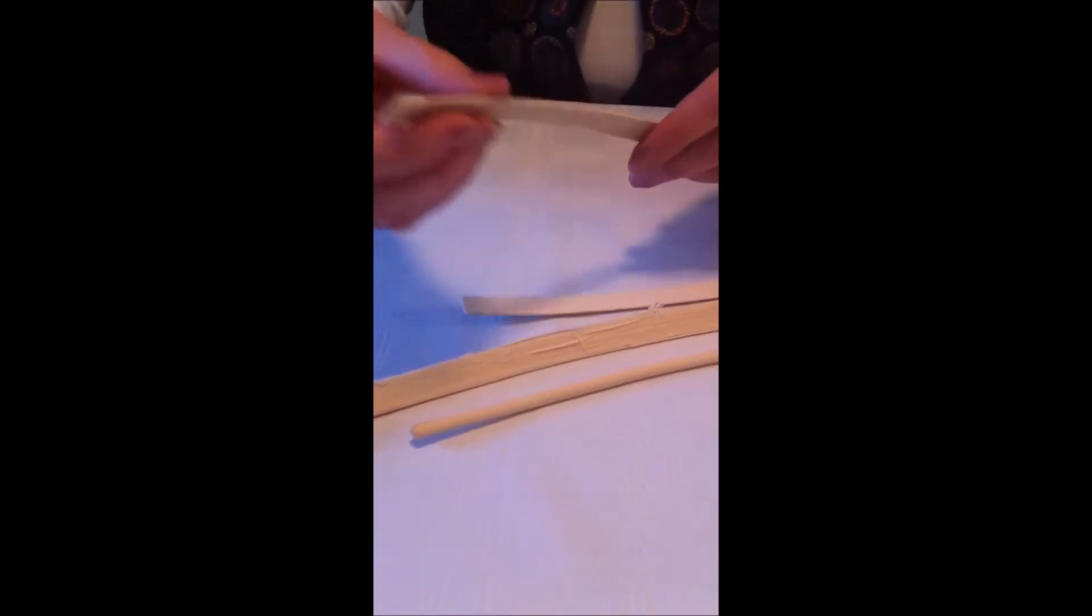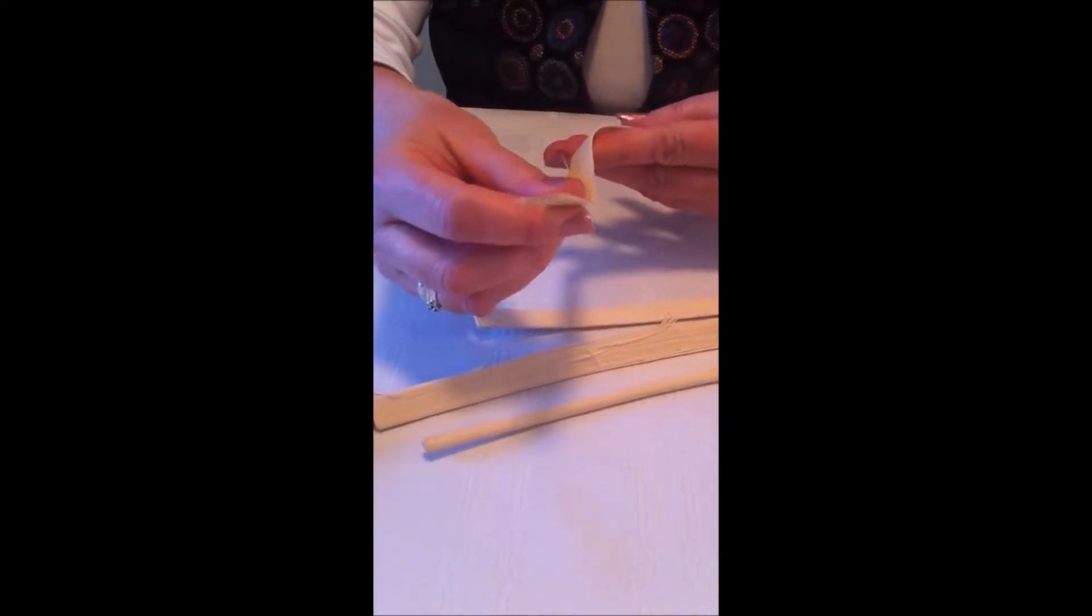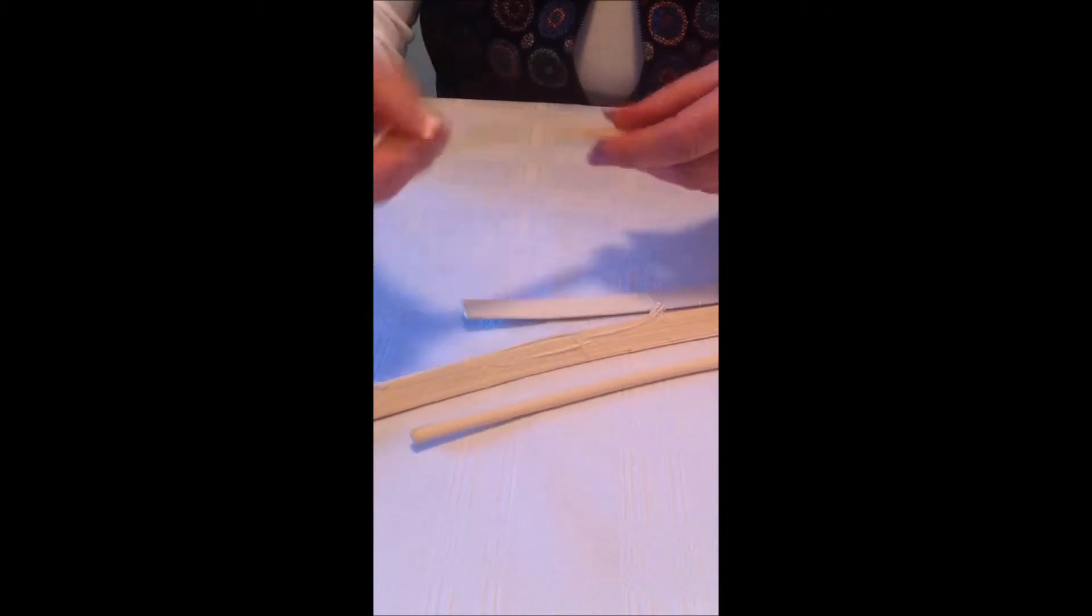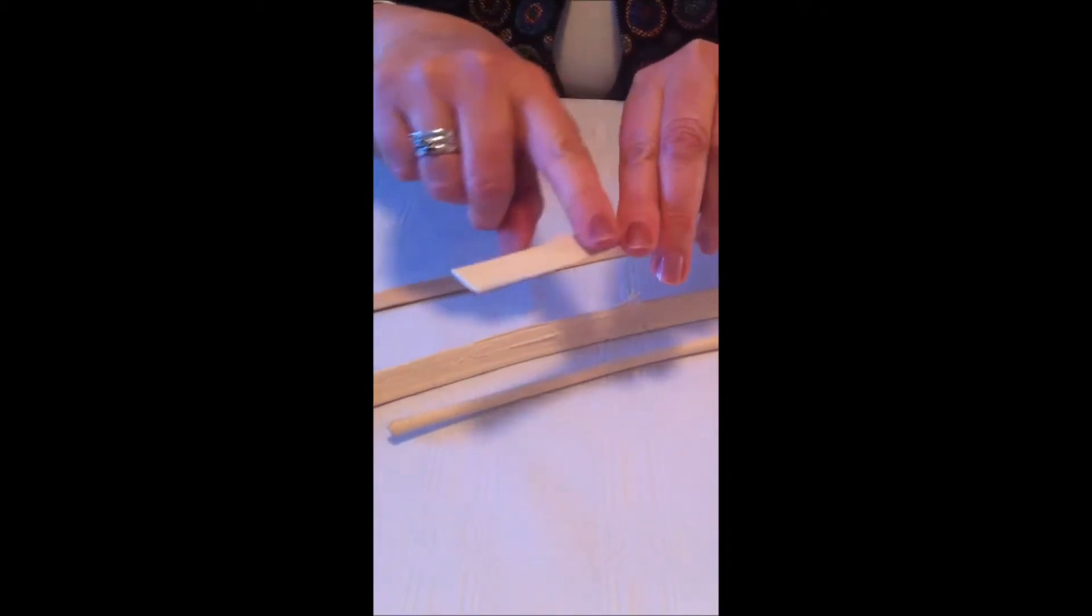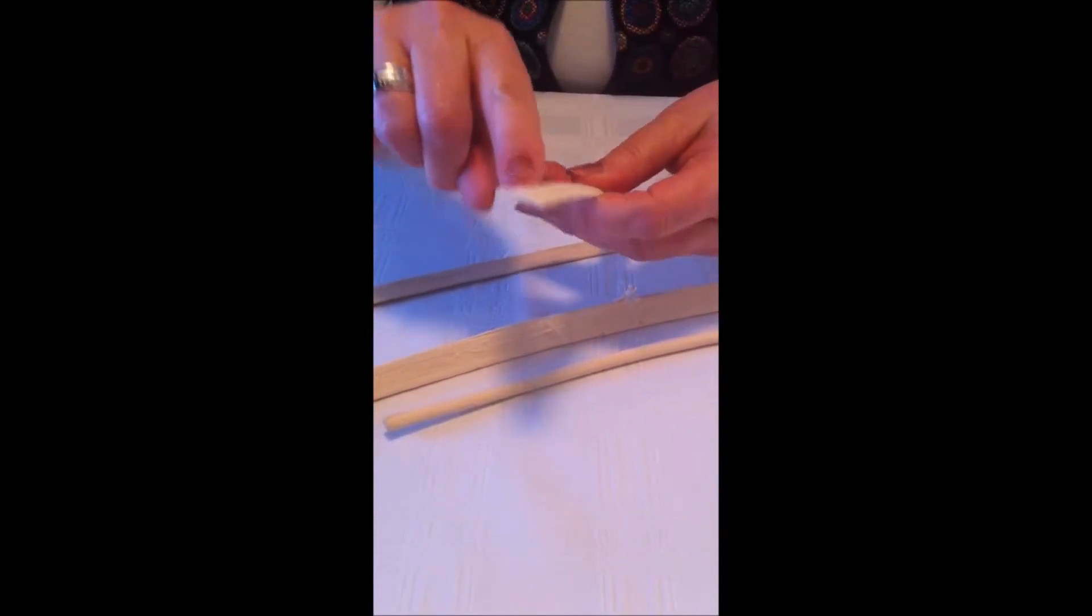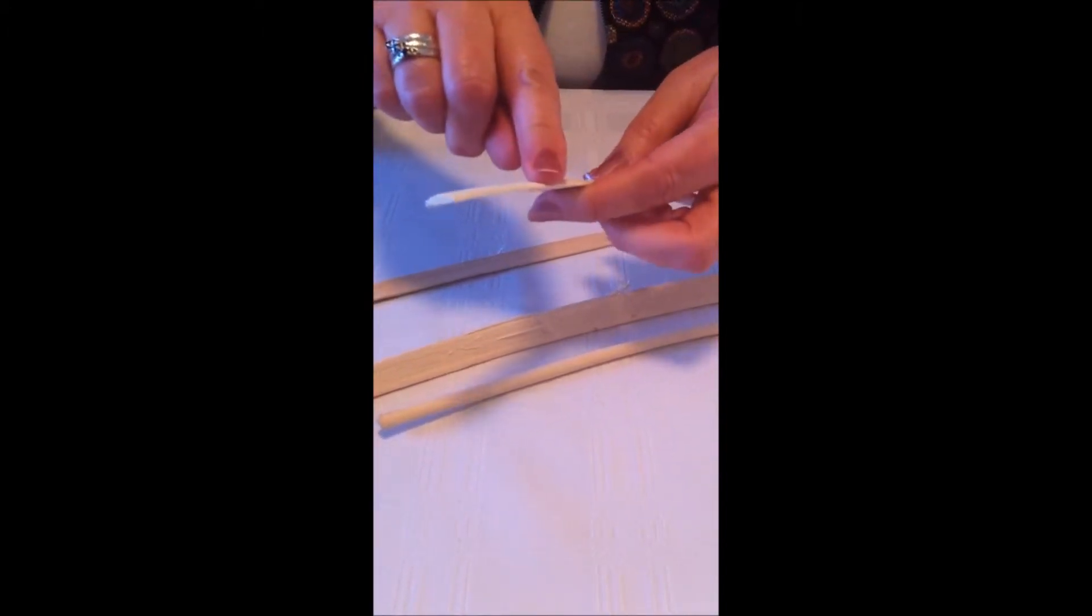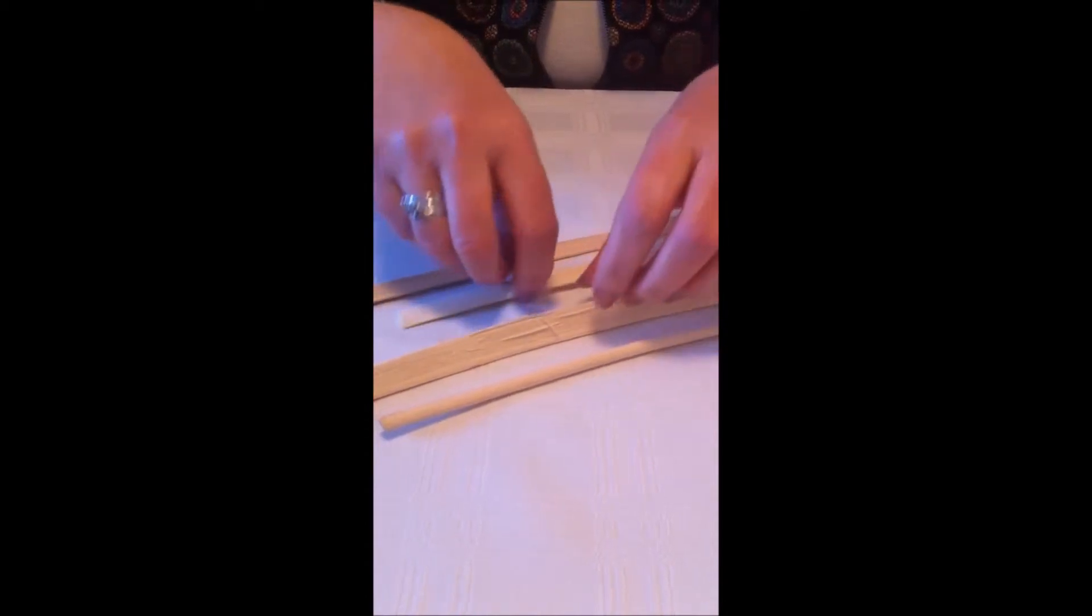And your reeds. There is a flat, flat reed. It's flat on both sides. We have a flat oval, flat on one side, oval on the other. Used usually in making your rims on a standard basket.